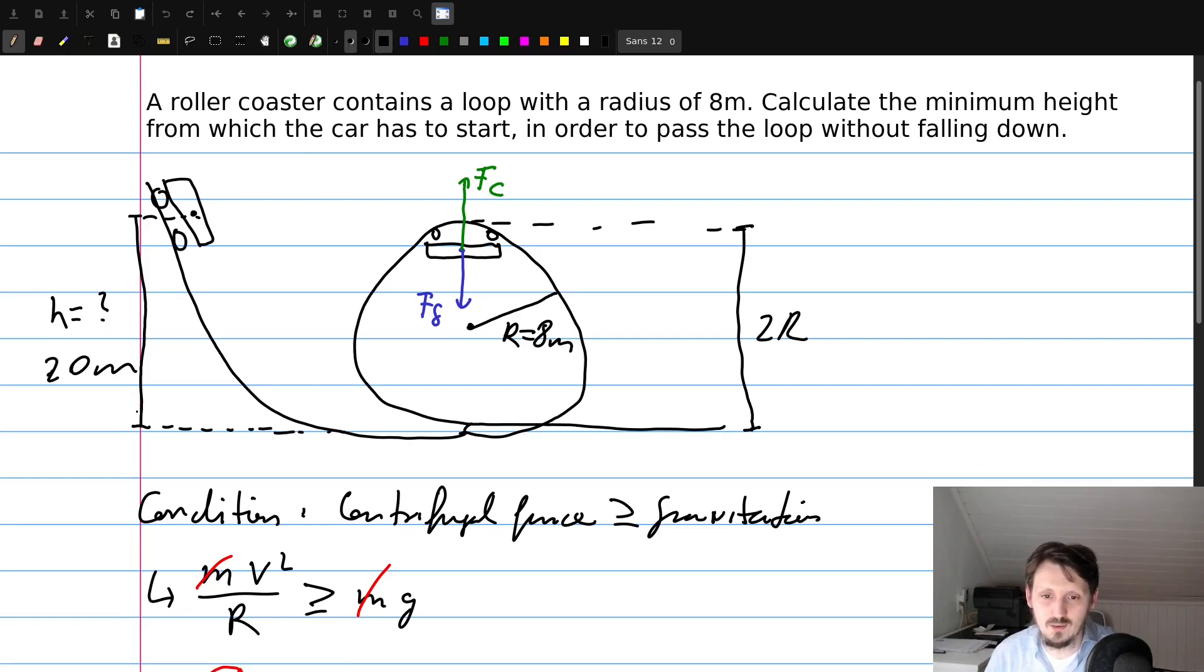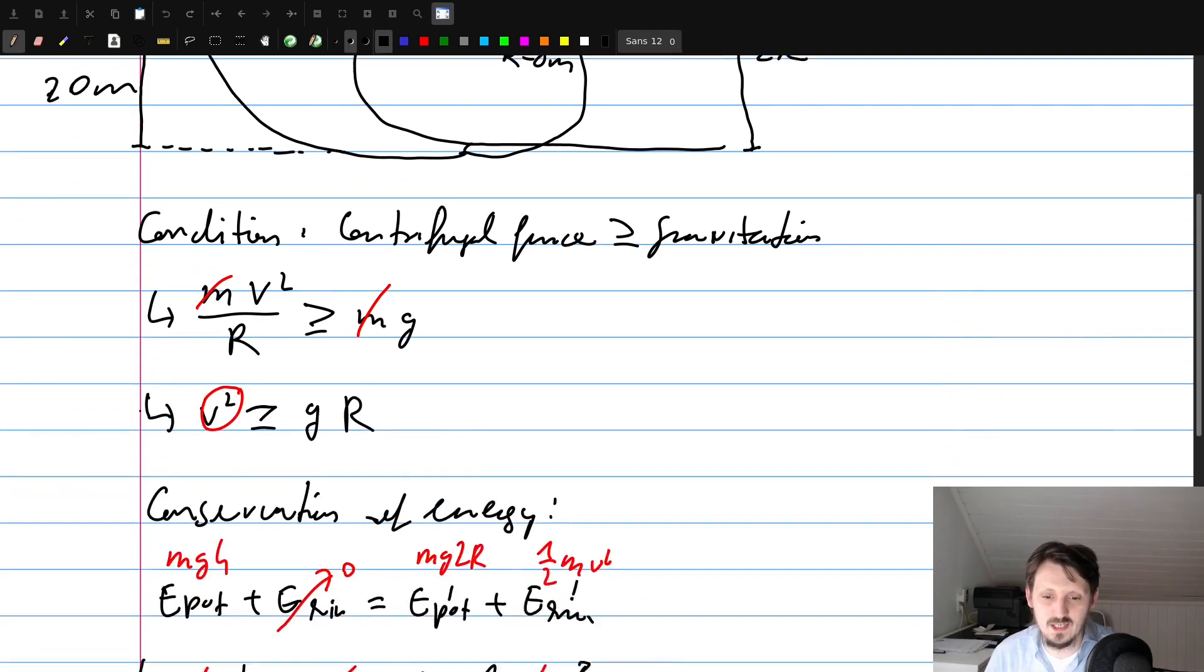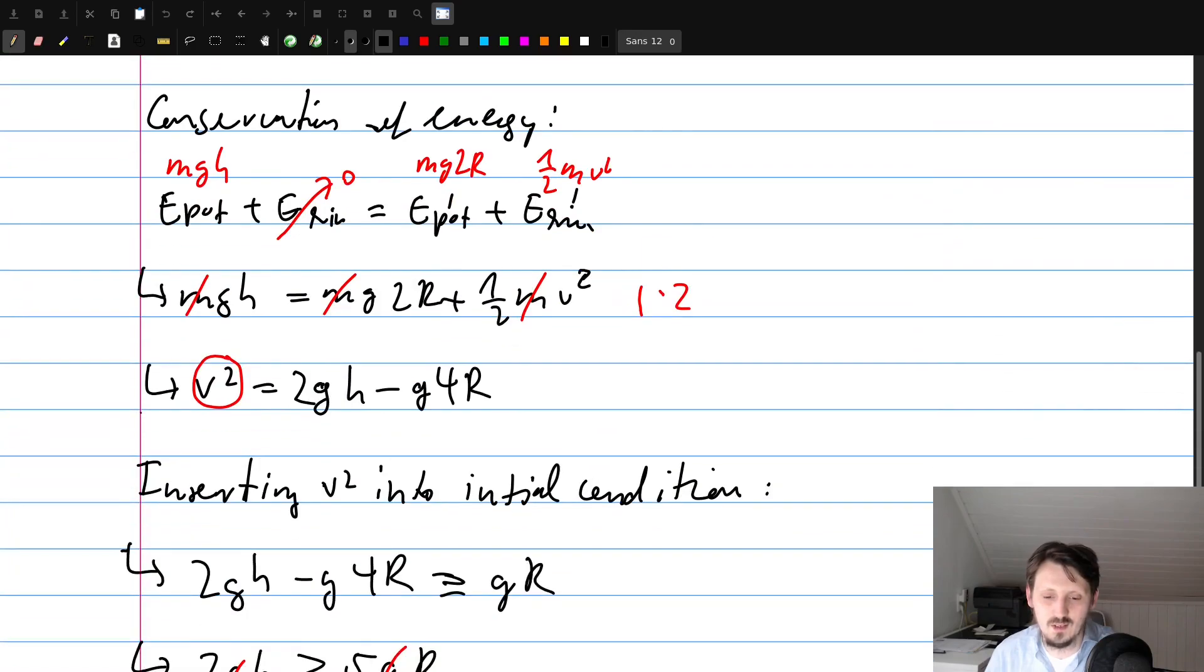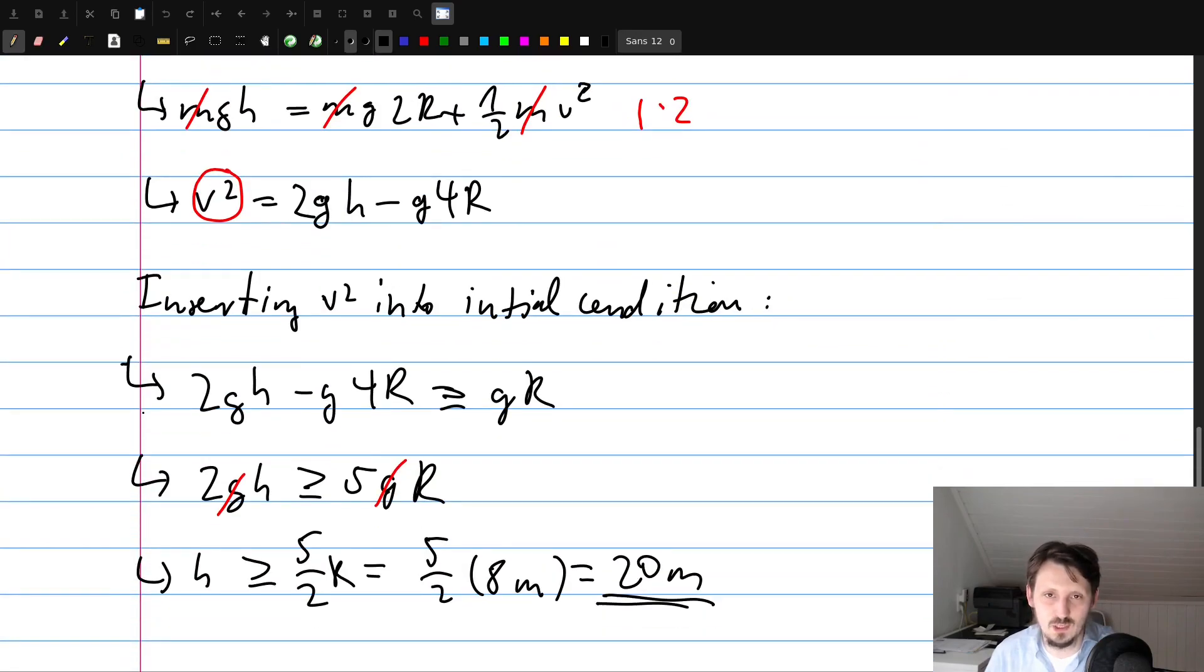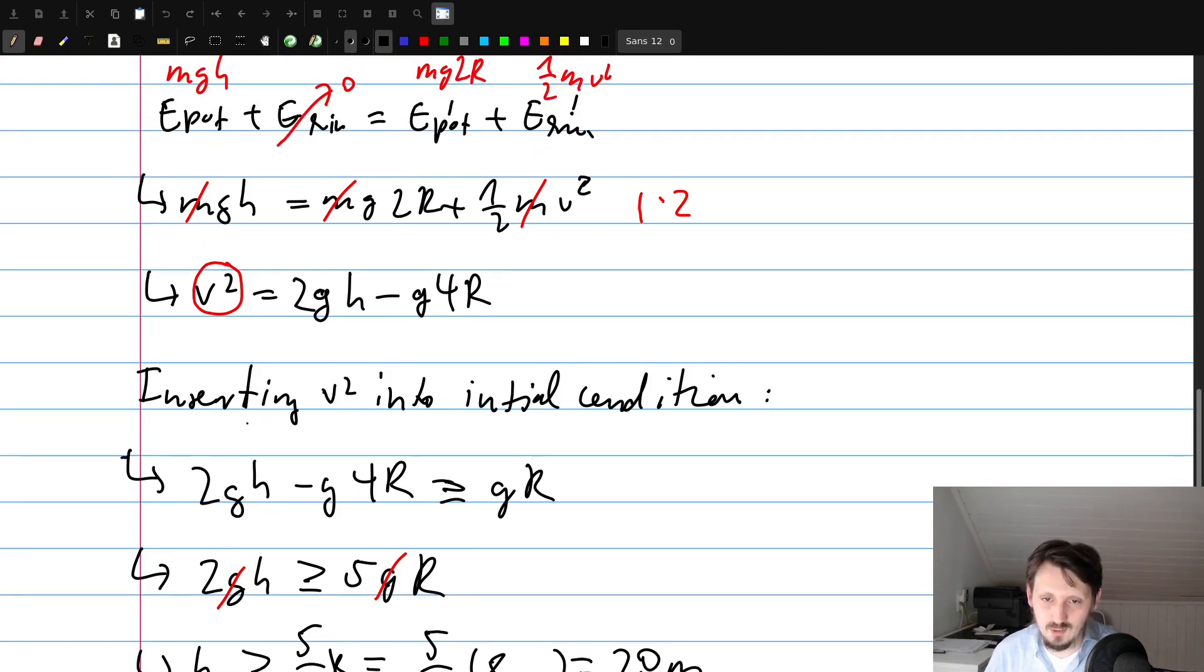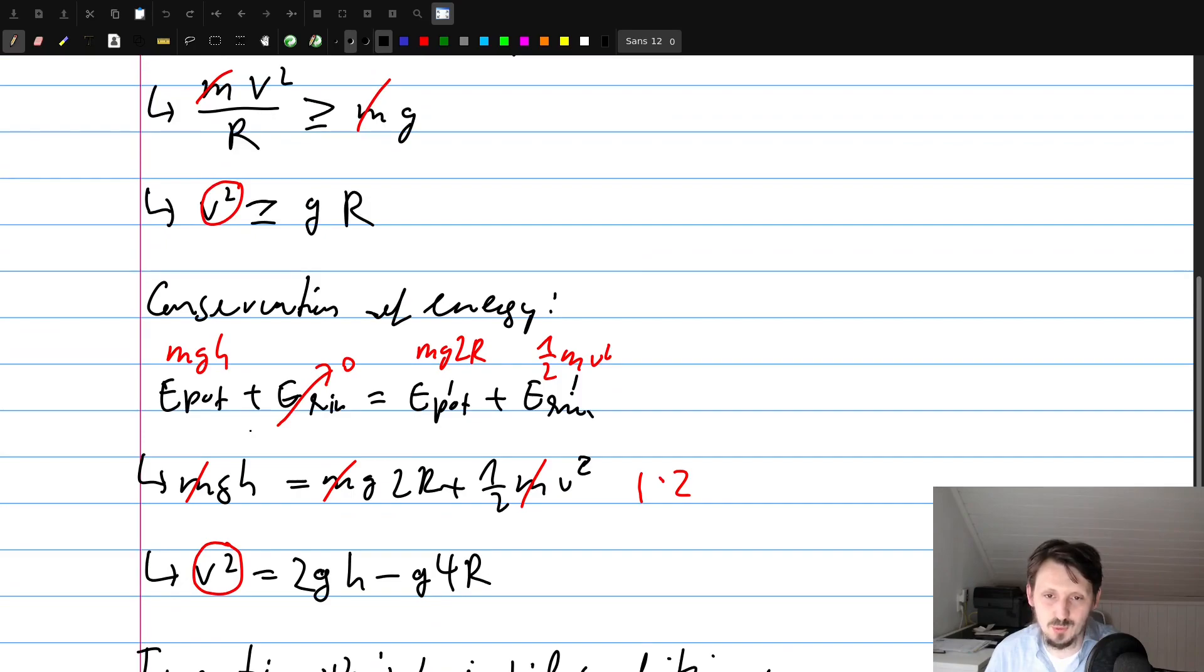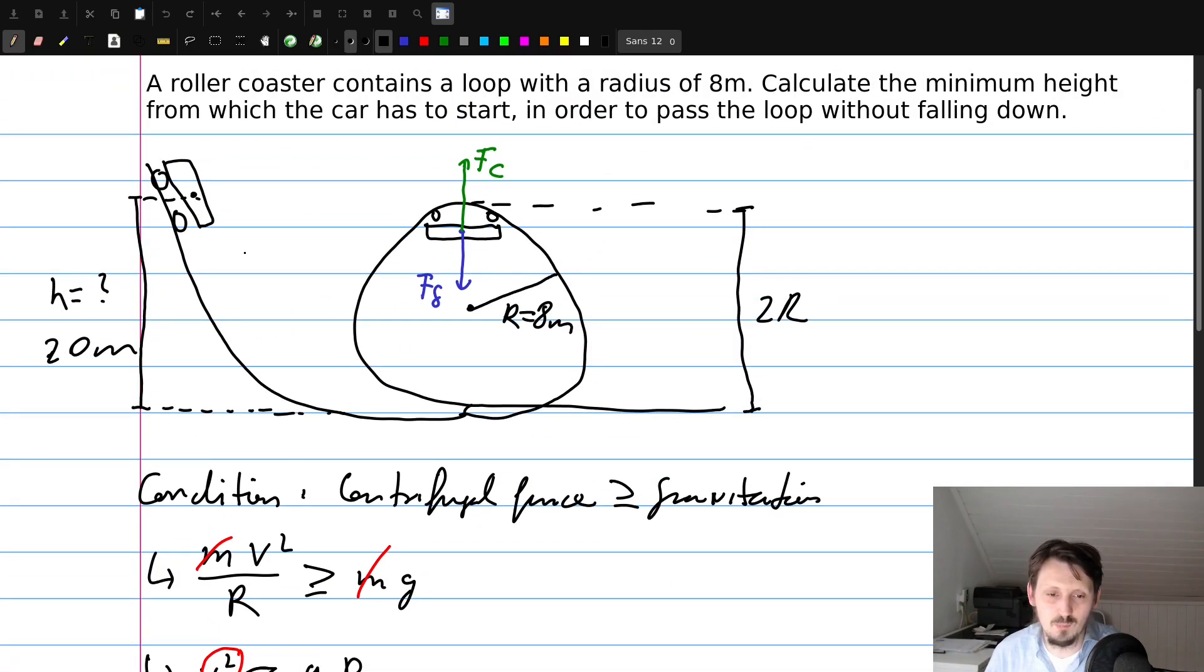This is everything what I want to explain. I hope that you enjoyed the exercise, that you learned something, and that you see that even an exercise which sounds complicated in the beginning can be actually solved very easily. The good thing of this exercise is that we learned how to use the energy conservation law, which makes the calculation quite easy. Of course you can also do it much more complicated and use other formulas from kinematics or dynamics. You can use F equals MA, for example, but all that makes it much more complicated.